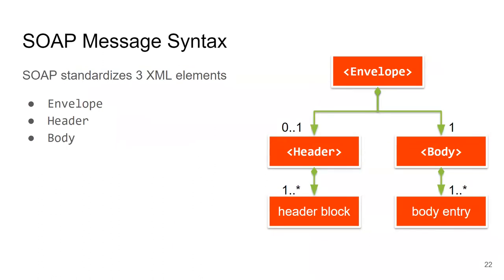A SOAP message has an envelope as the root XML element. The envelope always has a body containing application data, and may optionally have a header containing multiple header blocks. Within the body there may also be multiple body entries. That is the basic SOAP message structure.